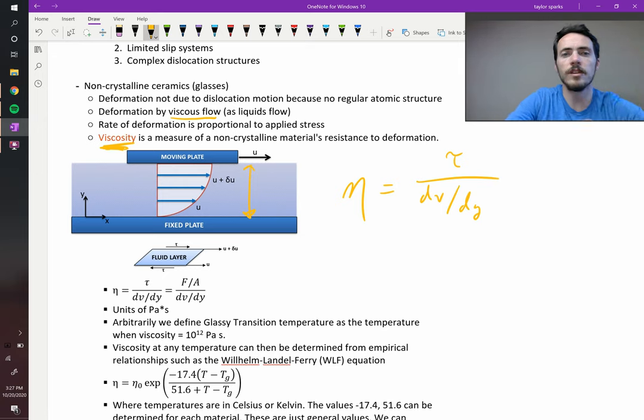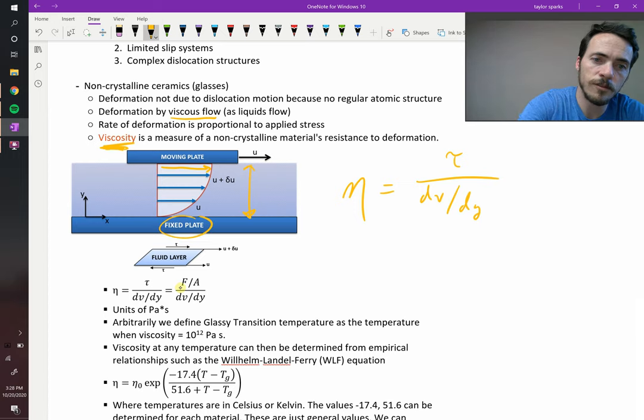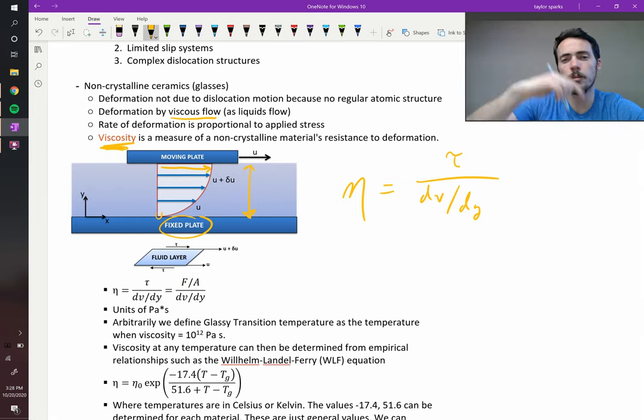The liquid right next to the plate is going to travel at the same velocity as the plate. But the liquid at the bottom on the fixed plate is going to travel at zero velocity, because this is a fixed plate, so it's not going to move at all. And then you've got this gradient going upward. So again, the shear stress divided by that gradient in velocity is your viscosity.